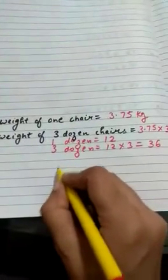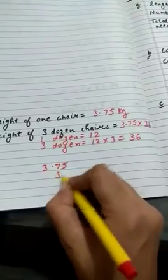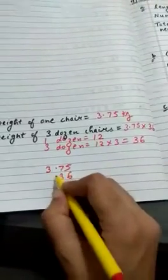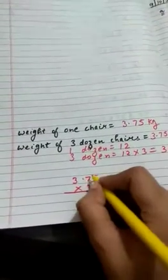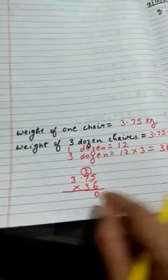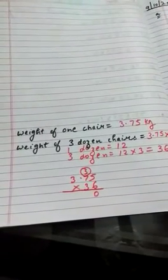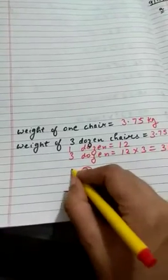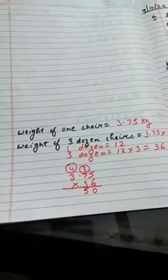Now we will multiply it. 3.75 into 36. Now multiply ka sign lagayenge. 6 into 5, we get 30. 30 ka 0, 3 upar. 6 into 7, 42. 42 plus 3, 45. 5 neeche aur 4 upar. 6 into 3, 18. 18 plus 4, 22.